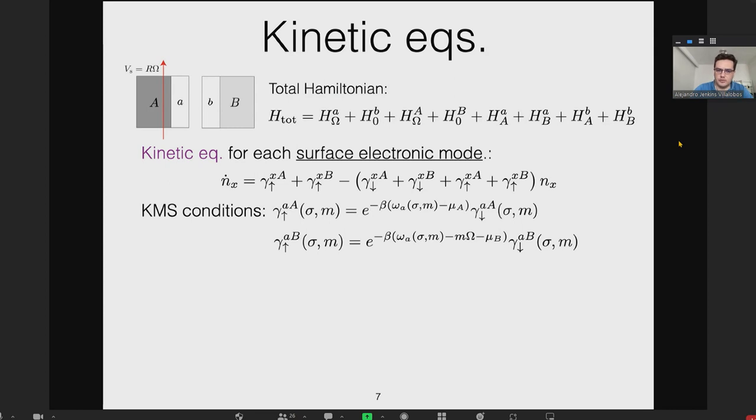I'm not making any attempts to calculate these g's—that would require much more expertise in material science than I have—but I want to say some concrete things that can be deduced without detailed knowledge of these couplings. We can write down kinetic equations for the population numbers of electronic modes of the surfaces. As usual in statistical mechanics, there's the KMS Kubo-Martin-Schwinger conditions.